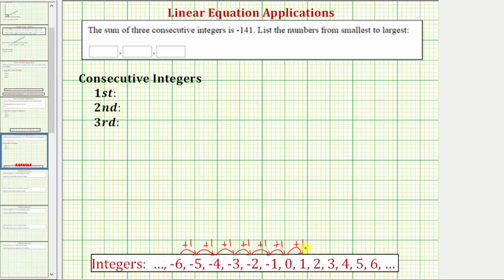Because of this, if we let the first consecutive integer be equal to x, the next consecutive integer would be x plus one, followed by x plus one plus one, or x plus two.